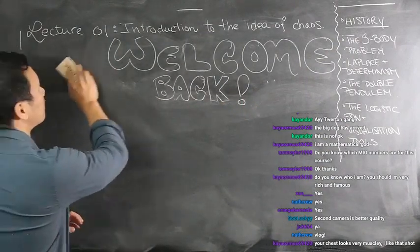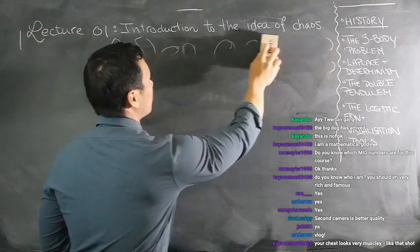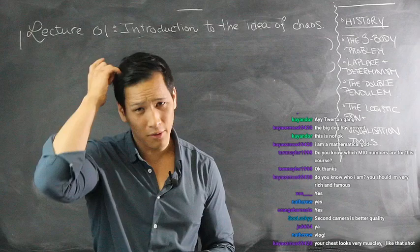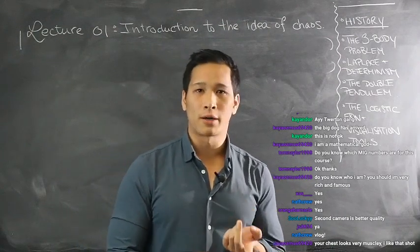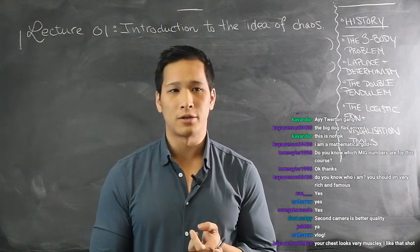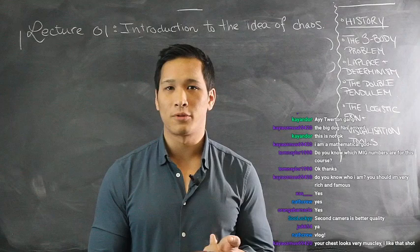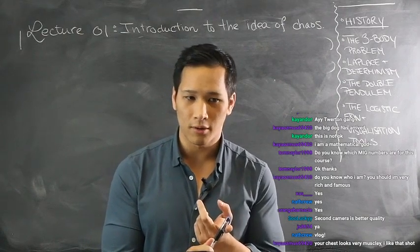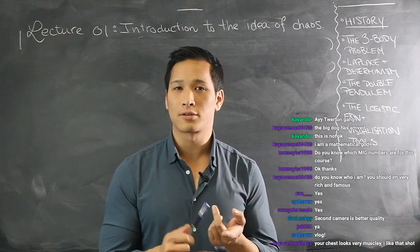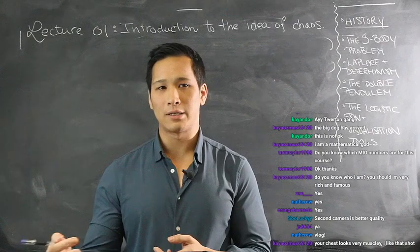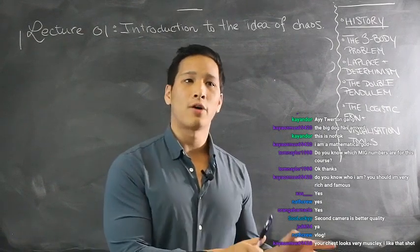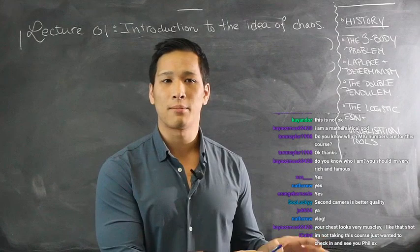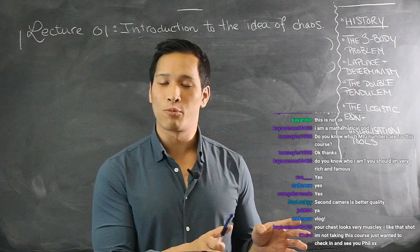The history of chaos theory has several origins, and different people will give you different explanations of where it came from. As it concerns this course, you can think about it in three ways. The first is the three-body problem — a problem from the 1800s and earlier about predicting the movement of the planets, falling into the scope of celestial mechanics. The discovery of chaos as it concerns planetary motion wasn't clear until after the 1950s, when mathematicians went back and realized these open questions turned out to be chaotic.